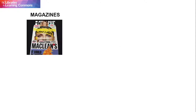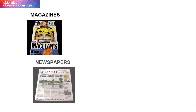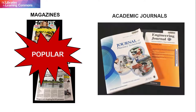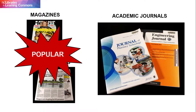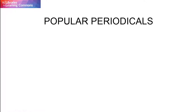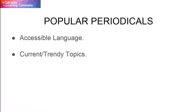Magazines and newspapers are considered to be popular periodicals, while academic journals are considered to be scholarly ones. Popular periodicals are written using language that is accessible to the majority of their readers. They contain articles on current events and or trendy topics.